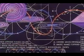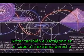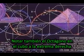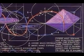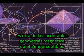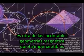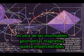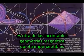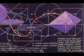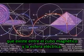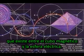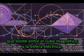Note also, the octagon in the cube to the far right is another of the countless unseen still-magnetic geometries which exist between the magnetic cube and electric sphere.